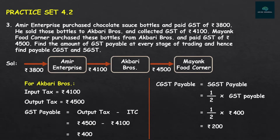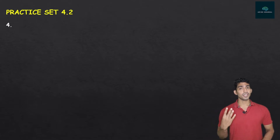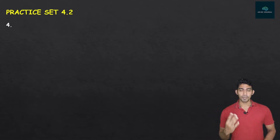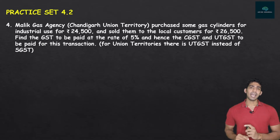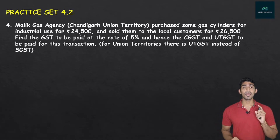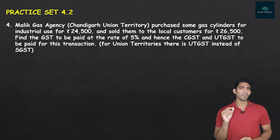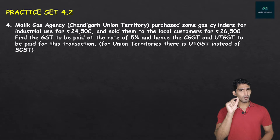The question was easy. This type of question is what we are doing today — slightly advanced, but of this type. Let's try one more question. This is Practice Set 4.2, Question 4. Malik Gas Agency, Chandigarh Union Territory — this is an interesting question because it talks about a Union Territory instead of a State.